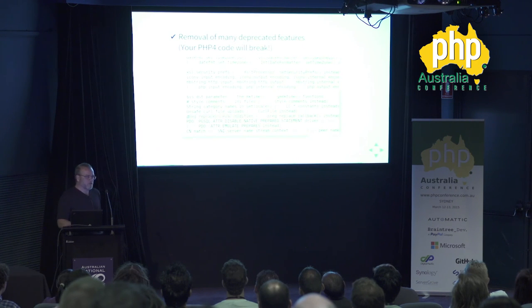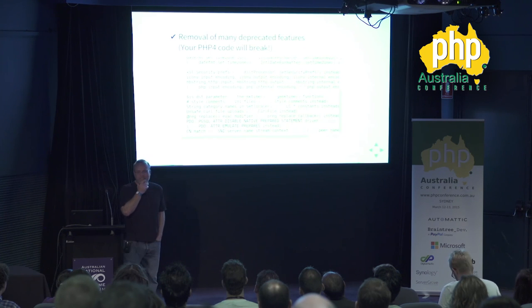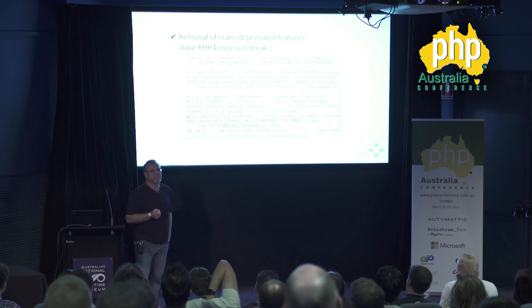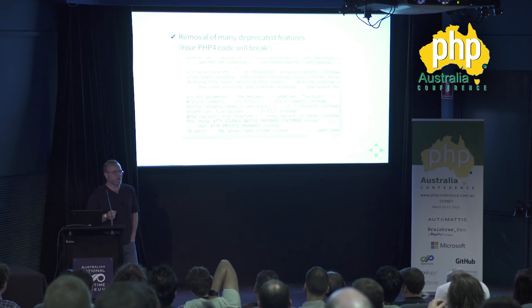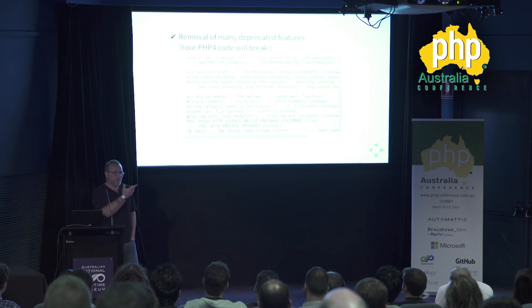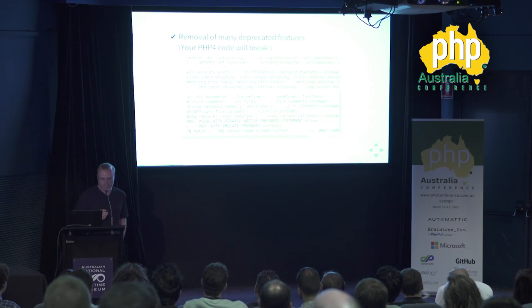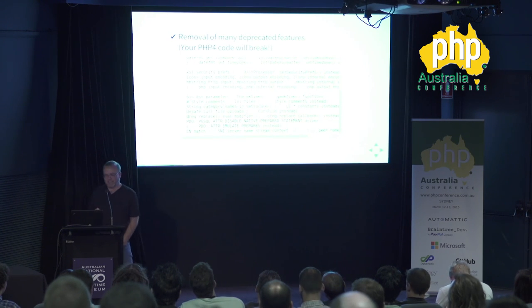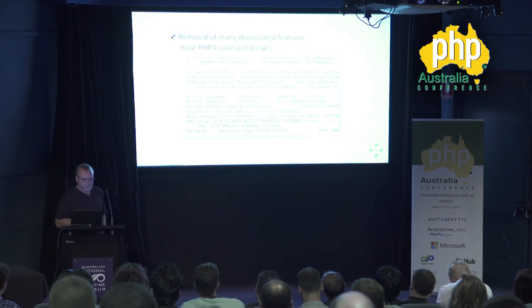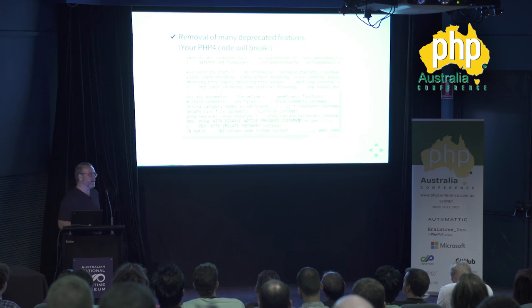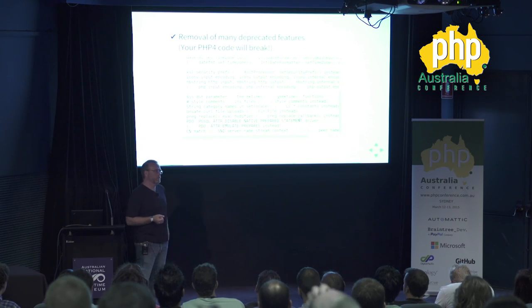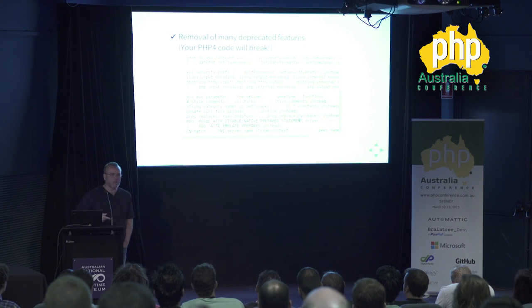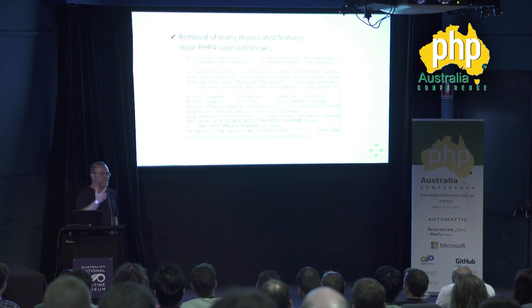The preg_replace /e flag — slash-e on preg calls — has always been rather risky, because it essentially calls eval on matches, and it's hard to figure out what that might do if you don't have a lot of control over your input. On well-sanitized input, no problem; on unsanitized input, big problem. So that has been removed. You now use preg_replace_callback instead — just pass it a function or closure, and that will take the matches, so you're not just evaling arbitrary stuff.